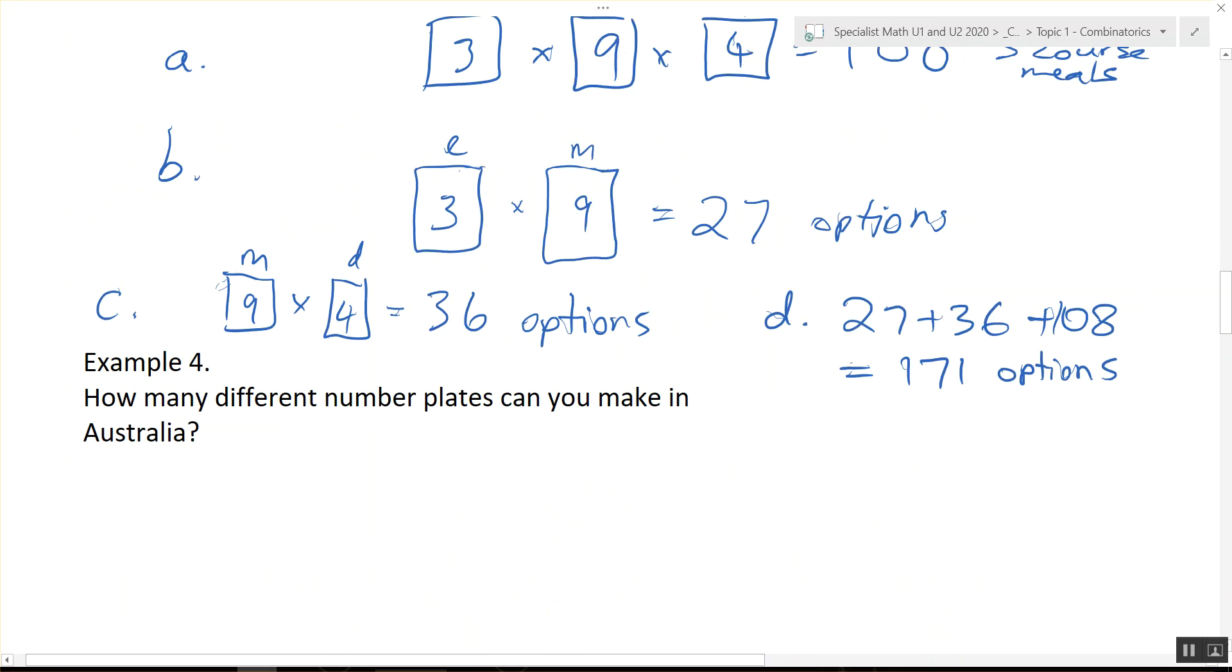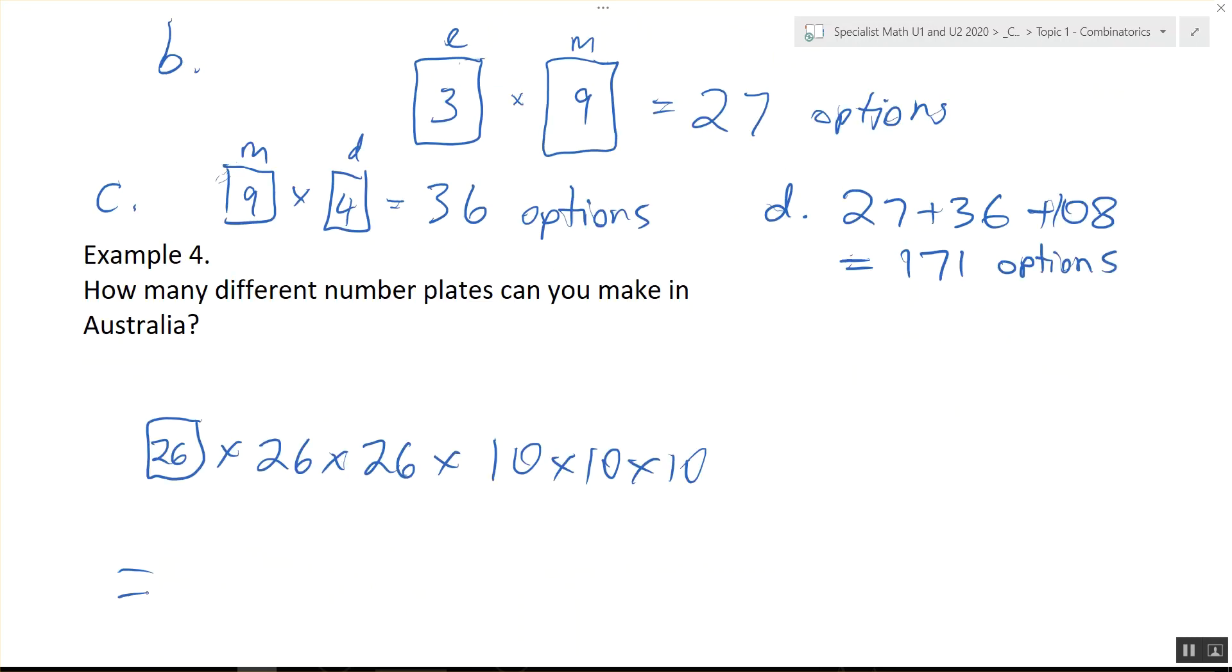Three letters, three numbers. What are we going to do? There's 26 letters in the alphabet. So 26 times 26 times 26. Then for the numbers, it's 0 through 9, so 10 times 10 times 10. There are that many different plates.